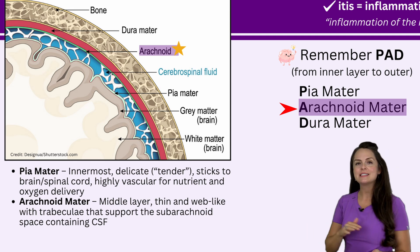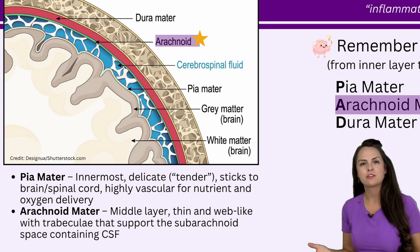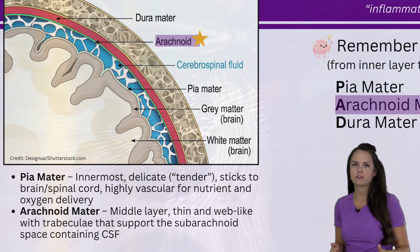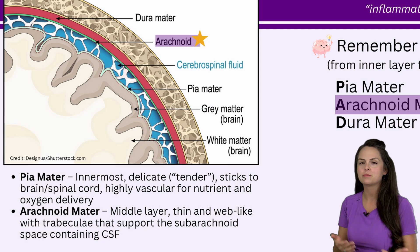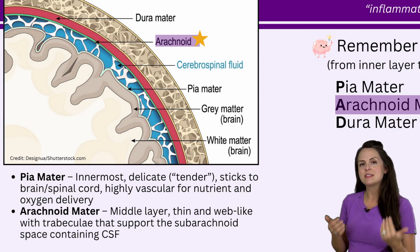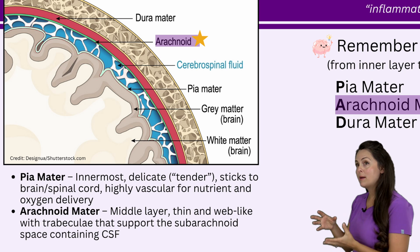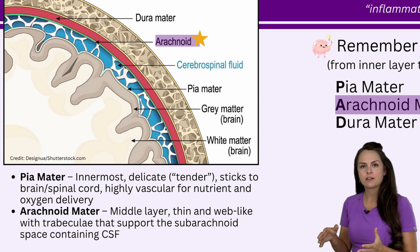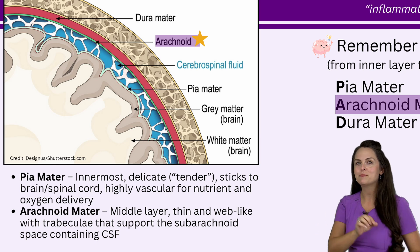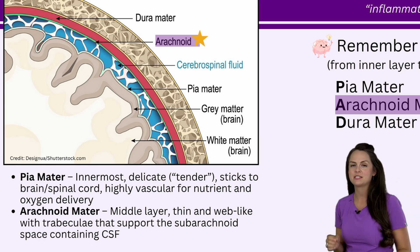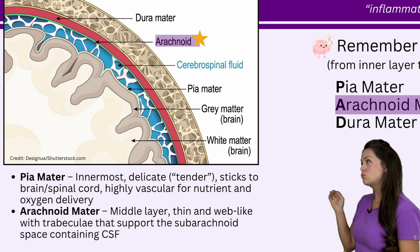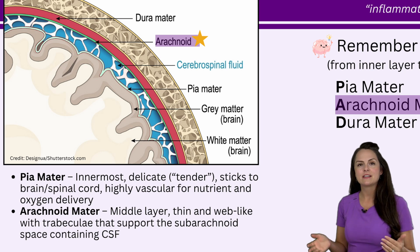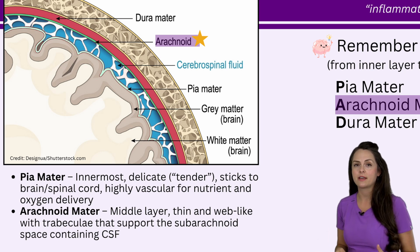Next is the arachnoid mater, our middle layer. The word arachnoid comes from Greek and is associated with spider-like structures. Just like spiders create webs, this layer is a thin web-like layer with web-like fibers called trabeculae that extend down into the Pia mater. It also helps form a very important space called the subarachnoid space, which contains our cerebrospinal fluid, or CSF — and CSF is one of the things we use to help diagnose a patient with meningitis.